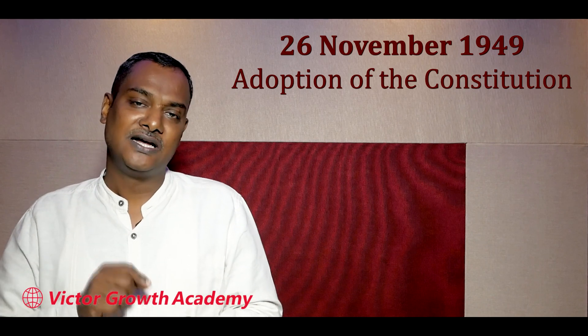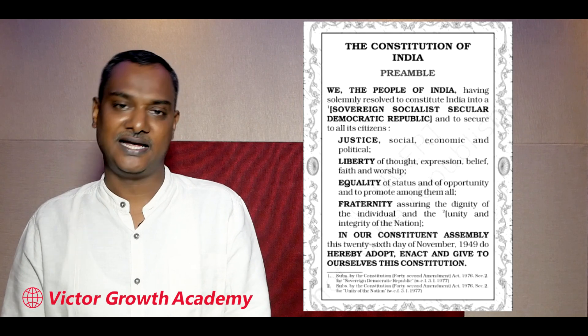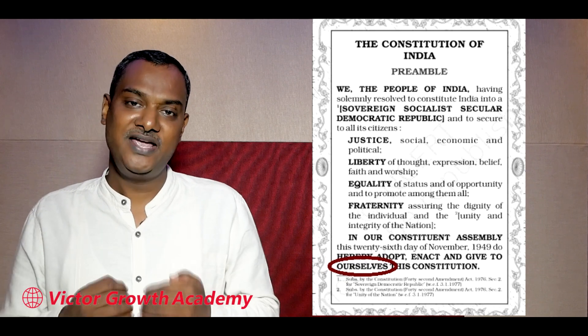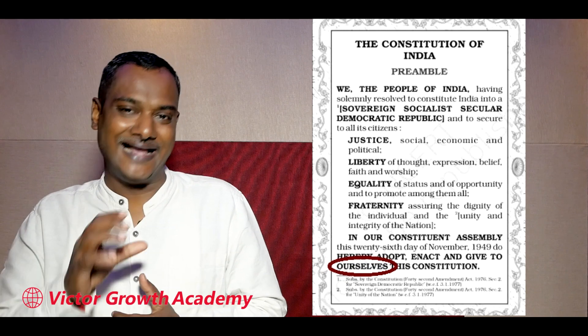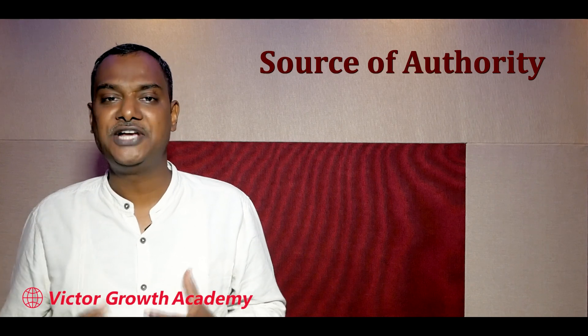In the constituent assembly on this date of 26 November 1949, we do enact and adopt this constitution. And the end says that this preamble — we are given by the people to themselves. We give ourselves this constitution. So in the preamble at the end line, they are saying we ourselves are giving this constitution to the people.